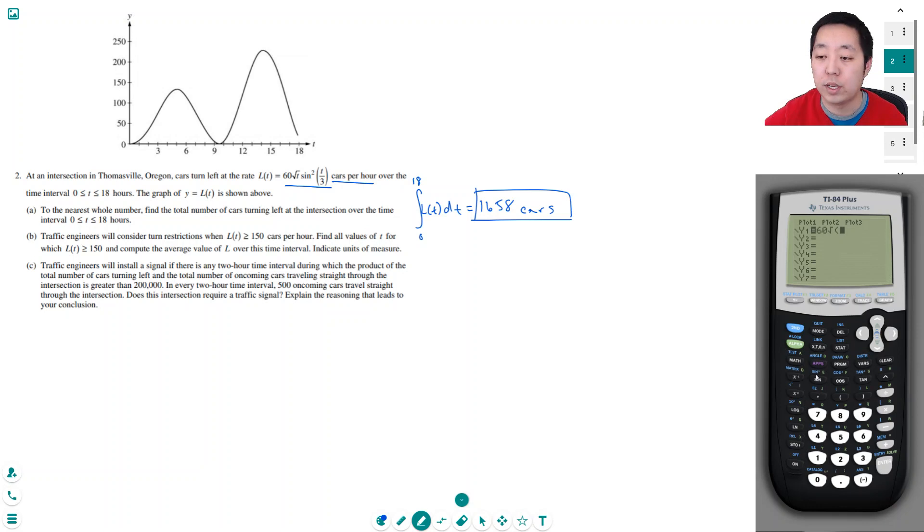Actually, let me show you how to do intersection, just in case you're curious and you prefer doing it as intersection. Sine of x divided by 3 squared. Oops, what did I mess up? Oh, I don't know why I put a comma there.